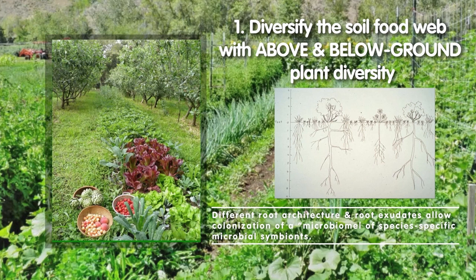We're going to see that the different root exudates allow colonization of a microbiome. Everyone knows what I mean by a microbiome — it's kind of a new, cool term now — of species-specific microbial symbionts. Symbionts meaning an interaction between the plant and the microbe. We're going to talk a lot more about this on Tuesday, but for now we're just introducing it as part of our first principle.